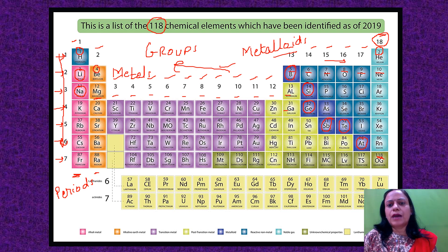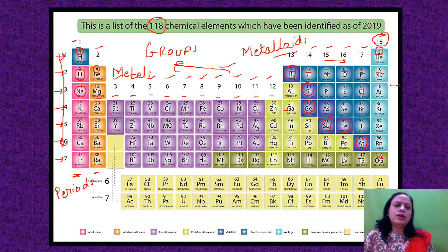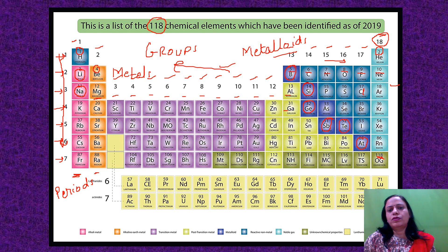All elements towards the right-hand side of the metalloids are non-metals — carbon, nitrogen, oxygen, fluorine, neon, phosphorus, sulfur, chlorine, argon, and others on that side are all non-metals. So as you move from left to right, metals are followed by metalloids, which are then followed by non-metals.